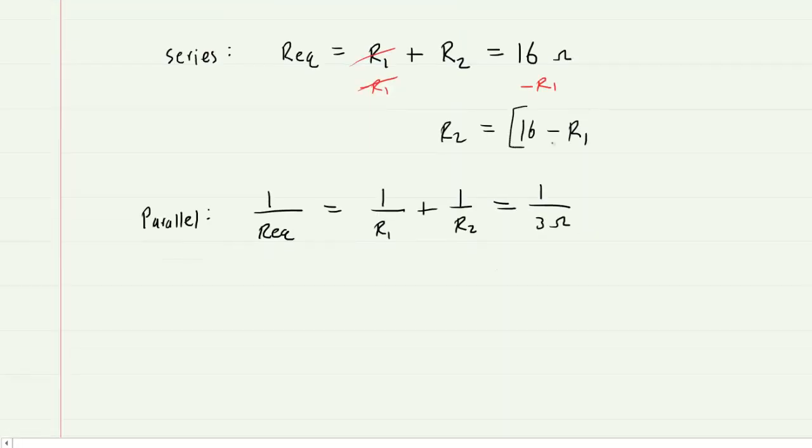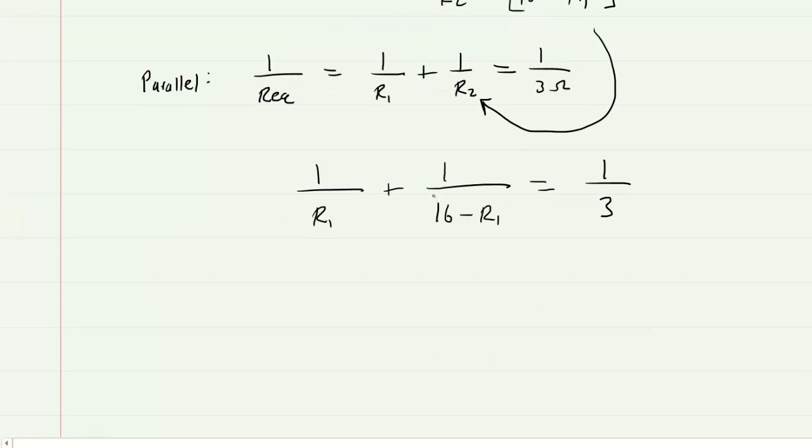We can then substitute 16 minus R1 into the R2 value of the parallel equation. So now we have 1 over R1 plus 1 over 16 minus R1 is equal to 1 over 3. Now to proceed, we'll have to find a common denominator. So we'll put this quantity in parentheses and we will multiply this denominator by R1 as well as the numerator by R1. And then for the other denominator, we'll have to multiply it by 16 minus R1 as well as the numerator.